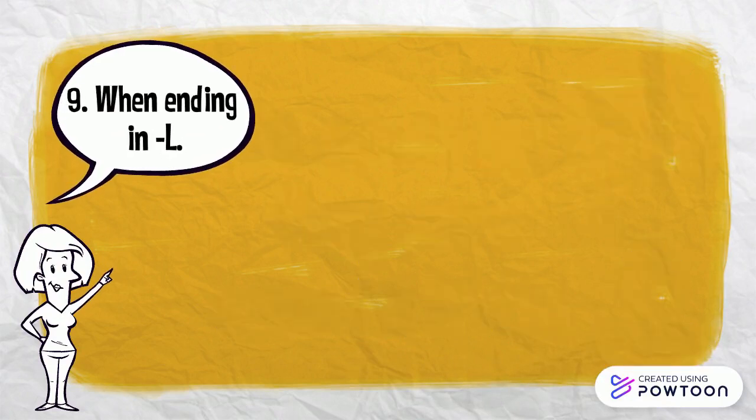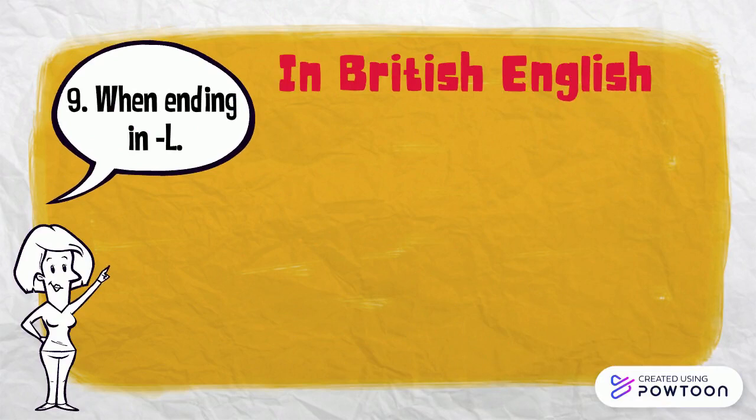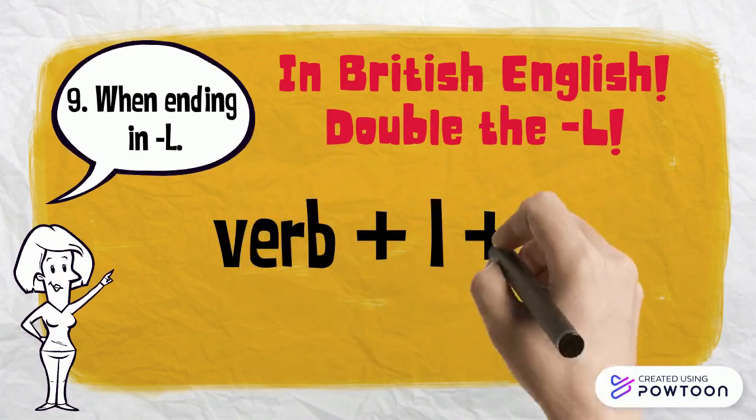In British English, when a verb ends in L, we double the L and then add ED at the end.